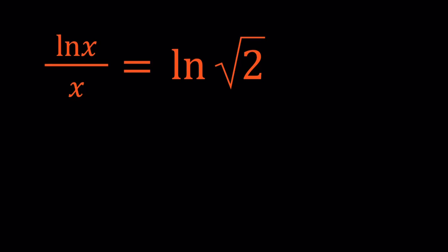Hello everyone. In this video we're going to be solving a logarithmic equation with natural logarithm or ln. That's what ln stands for and the base is E in this case, which is Euler's number. So we have ln x over x equals ln square root of 2 and we're going to be solving for x values.